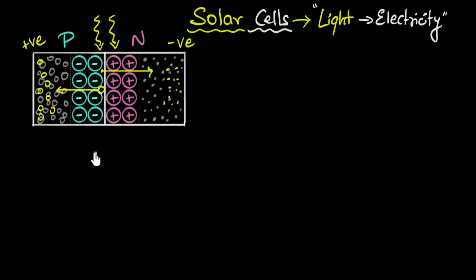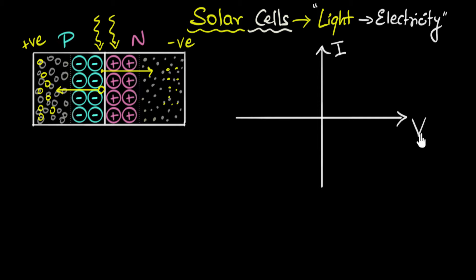We've talked about this in detail in our previous videos on the introduction to solar cells and working principles, so if you need more clarity feel free to go back and check those out. What we're going to do here is draw an IV characteristics curve. I'll put current I along the y-axis and voltage V along the x-axis.